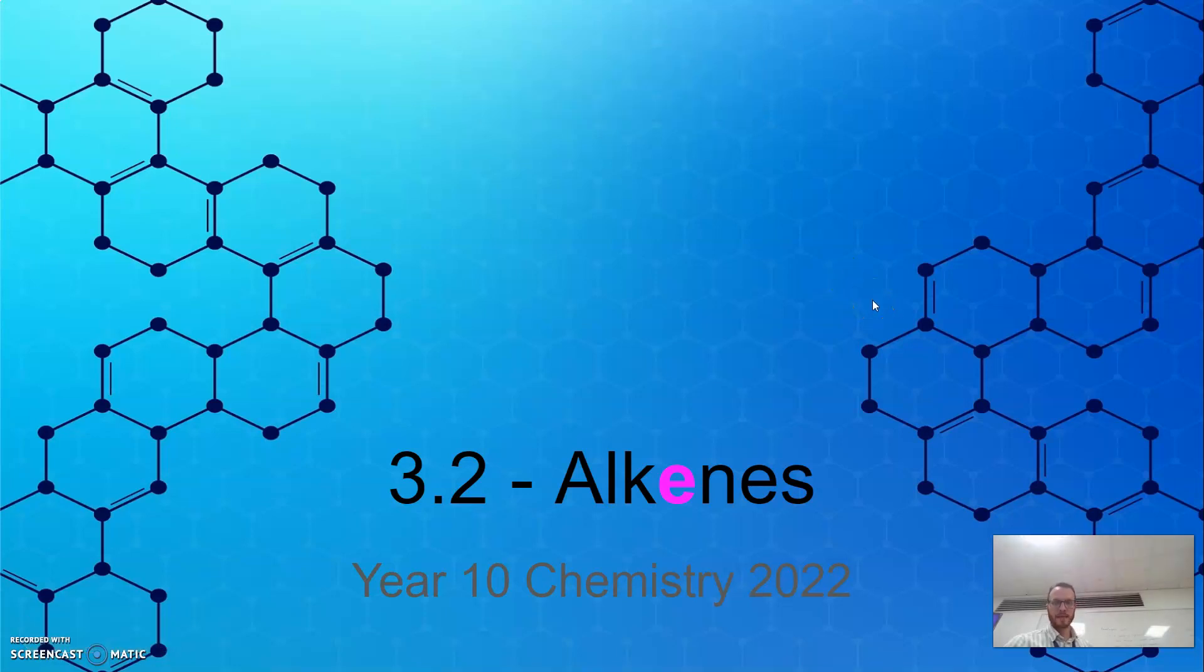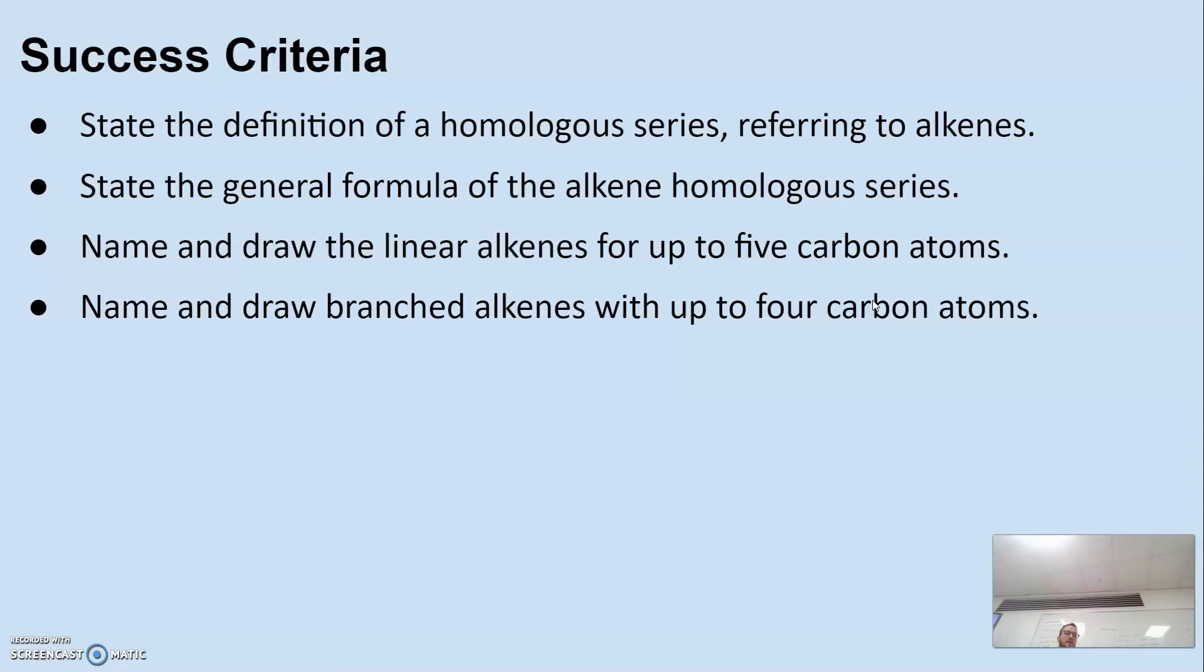Let's talk about alkenes. Alkenes, it's got an 'e' in it. Success criteria or the learning intentions link up together. Stating definition of homologous series referring to alkenes. Last class we looked at alkanes, today we're looking at alkenes. State the general formula for alkene homologous series. Name and draw the linear and branched alkenes up to 5 or 4 - 4 for branch, 5 for linear.